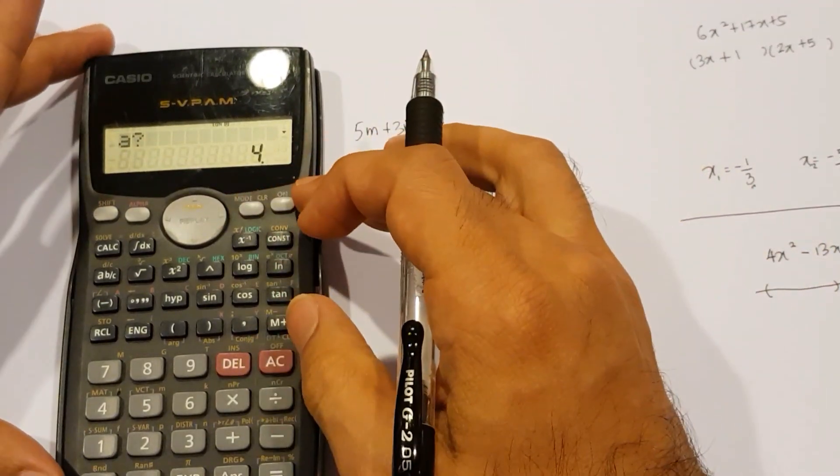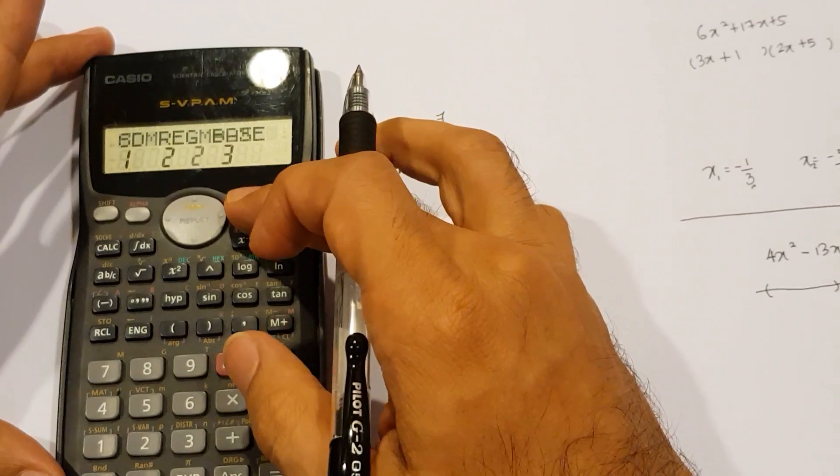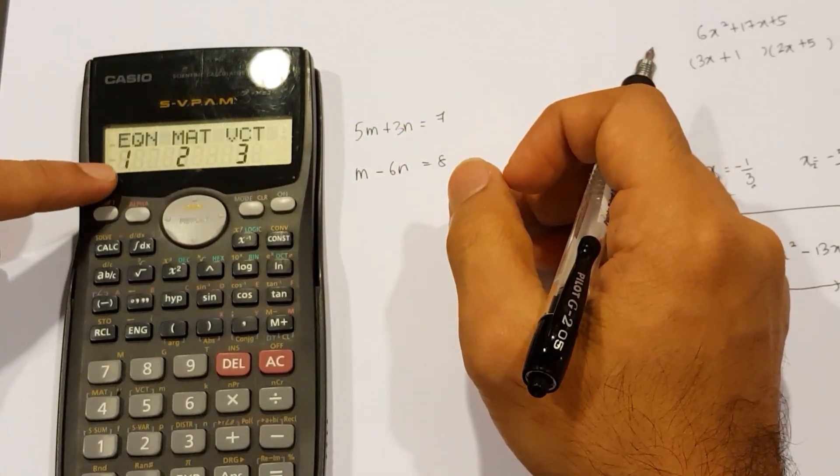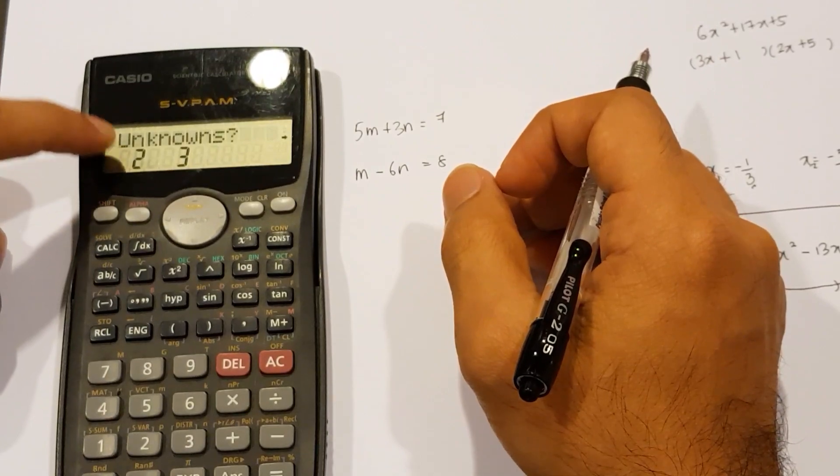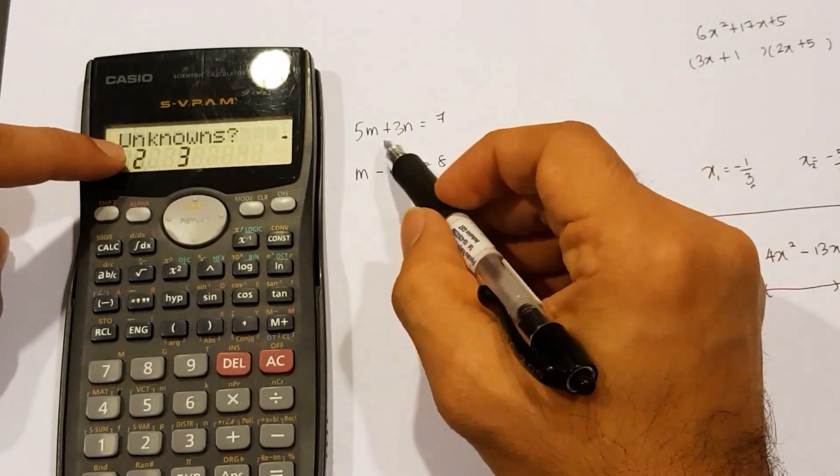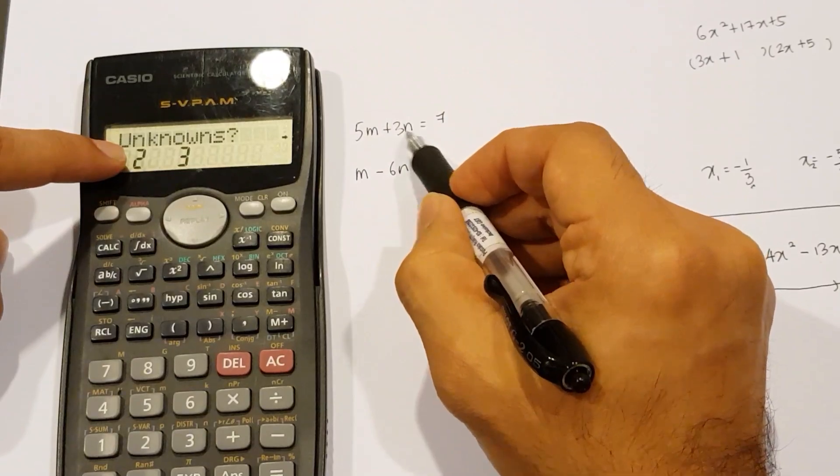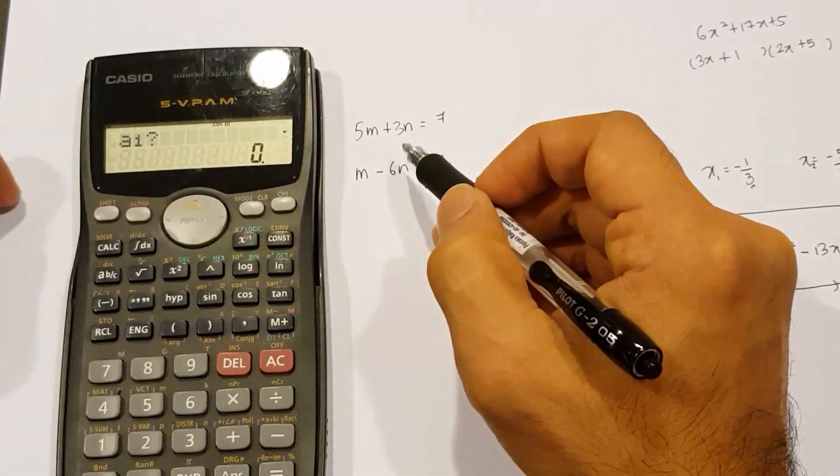I'm going to hit mode again three times. 1, 2, 3, same thing, EQN, that's 1, but this time we are going to go with unknowns. Unknowns would be 2 because I've got M and N. These are 2 unknowns, so 2.